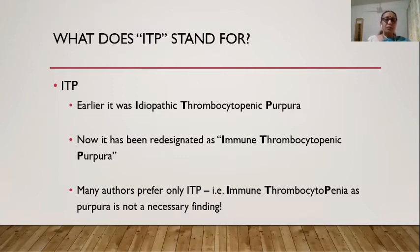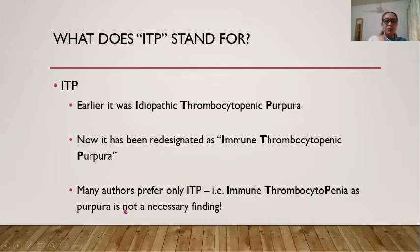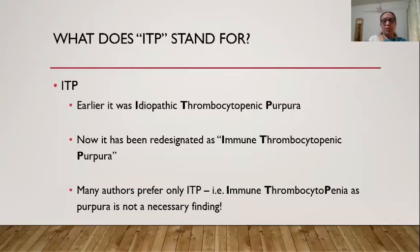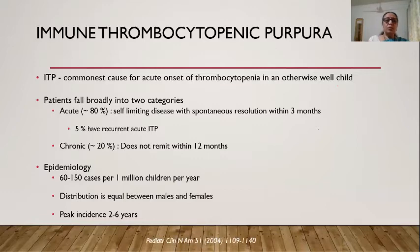ITP was previously called idiopathic thrombocytopenic purpura, then redesignated immune thrombocytopenic purpura, and many authors now prefer simply immune thrombocytopenia since purpura is not a necessary finding. ITP is the commonest cause of acute onset thrombocytopenia in an otherwise well child; 80% of cases are acute and self-limiting with spontaneous resolution within three months.